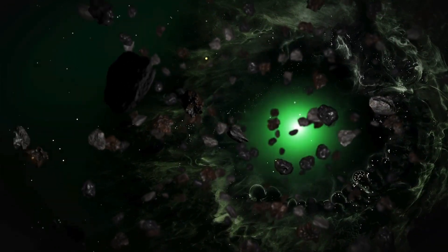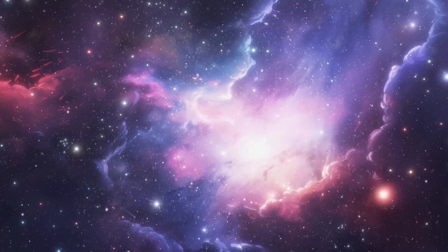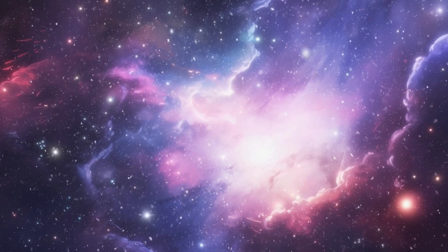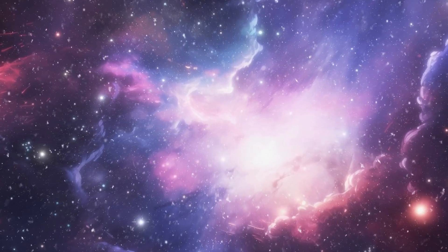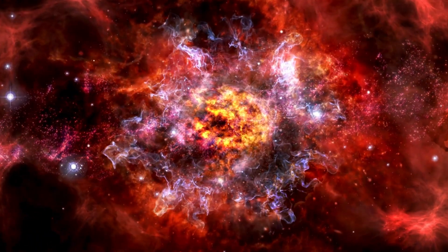The Kuiper belt, a region beyond Neptune populated with small icy bodies, is home to many other dwarf planets and potential impactors. This belt is a reservoir of ancient material from the early solar system, providing scientists with a glimpse into its formation.